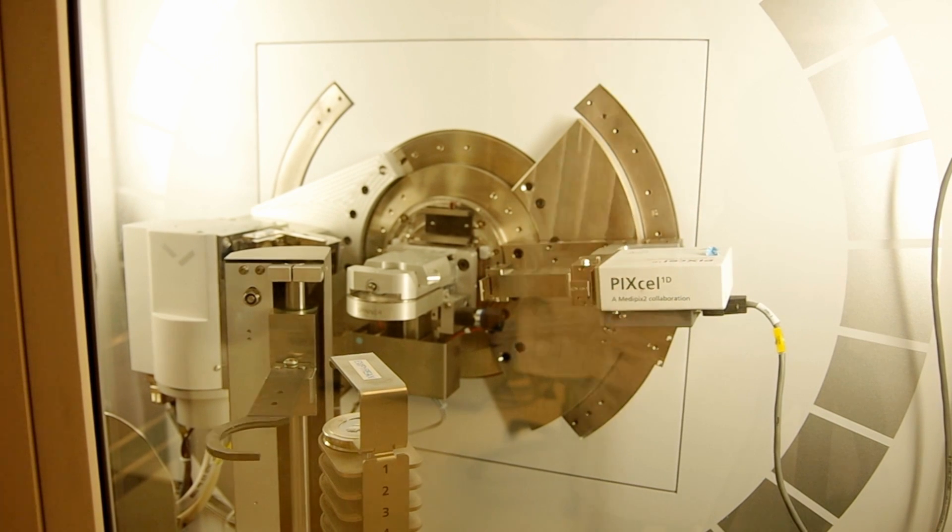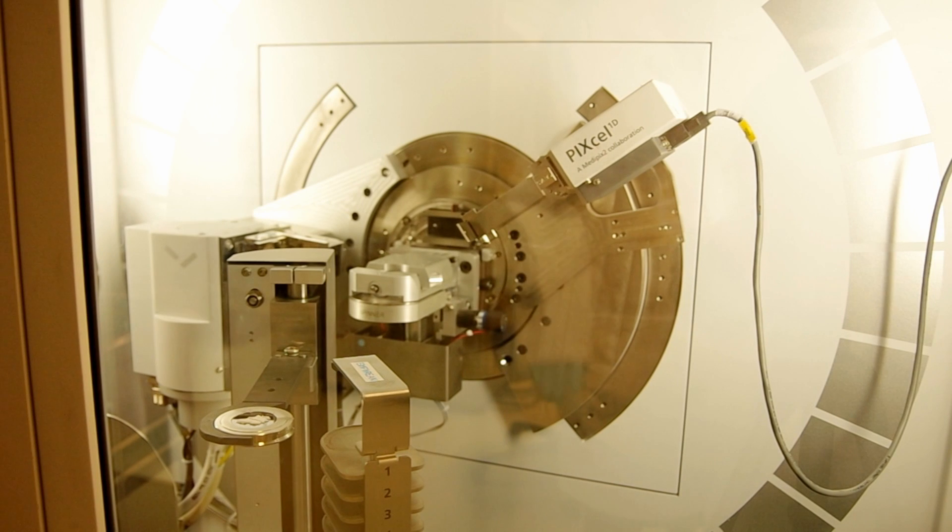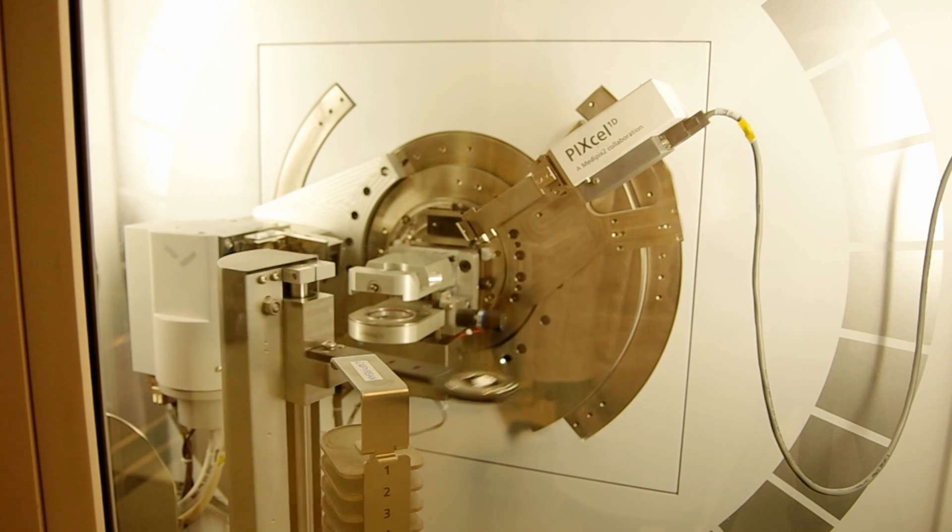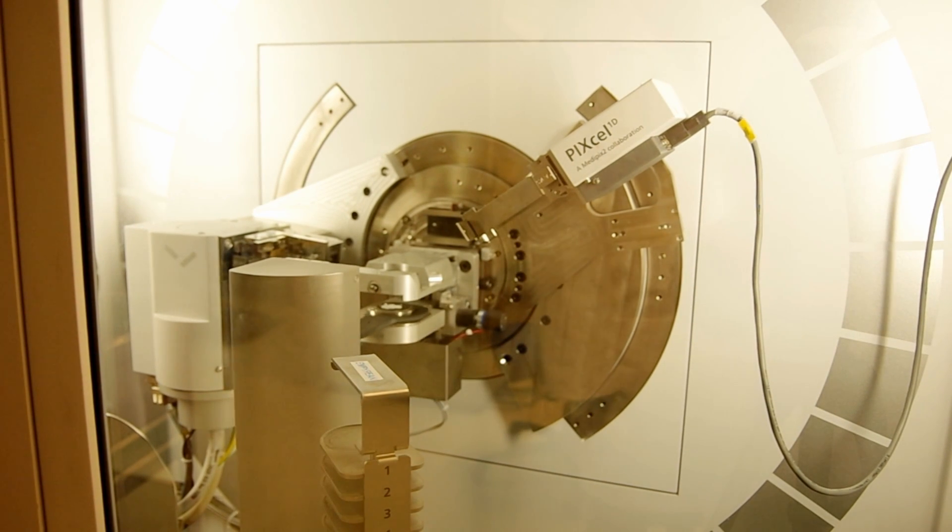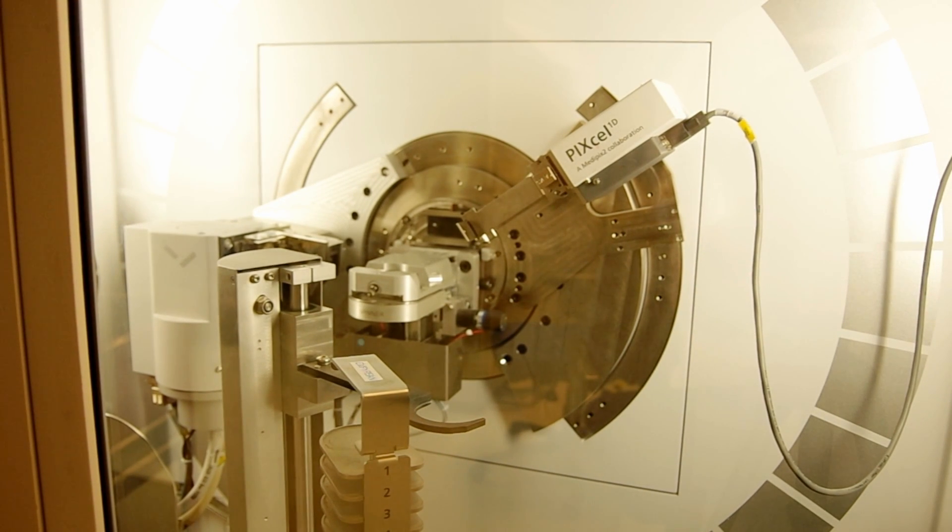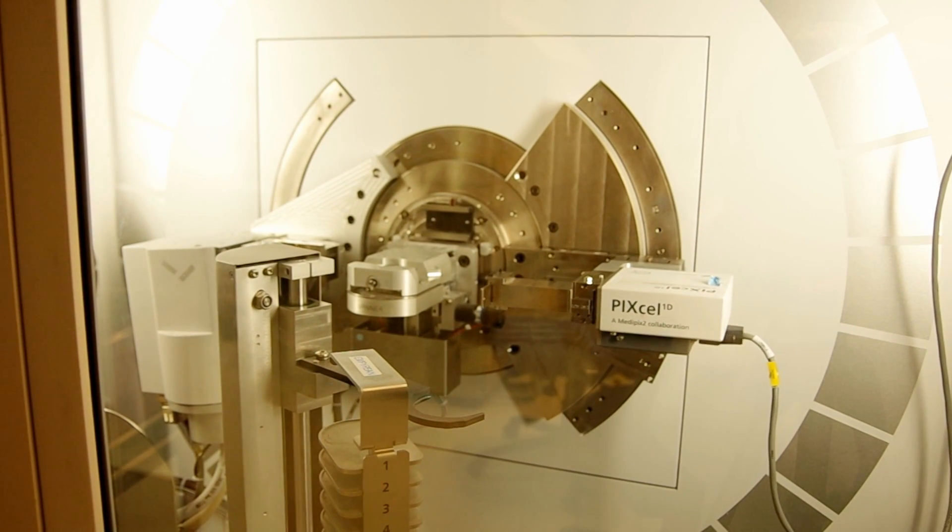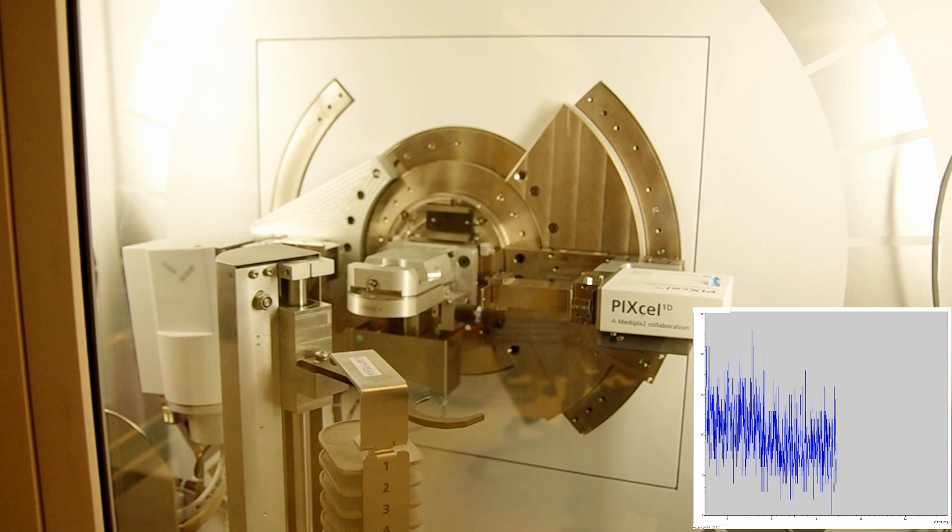The sample arm takes the sample from the sample holder and puts it on the platform. The detector then lowers itself down to the start angle to start the measurement.